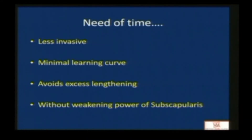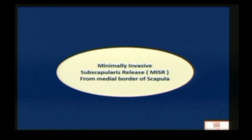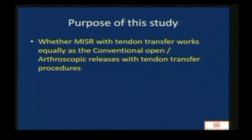The need is to find something less invasive, with minimal learning curve, which avoids excess lengthening of subscapularis and therefore does not weaken internal rotation at the shoulder. Since 2013, we have been doing minimally invasive subscapularis release from the medial border of scapula. The purpose of this study was to find out whether minimally invasive subscapularis release with tendon transfer produces equal results as other methods published in literature.